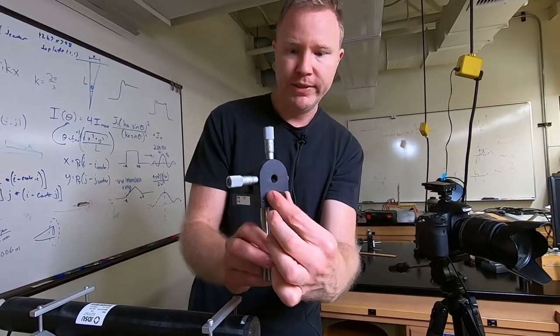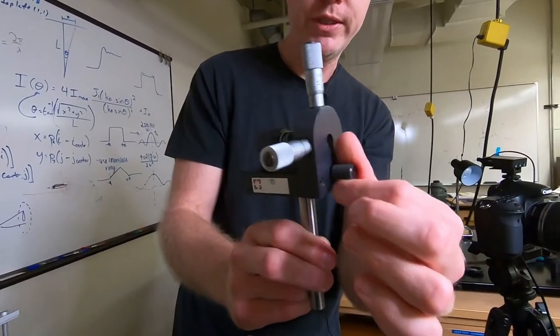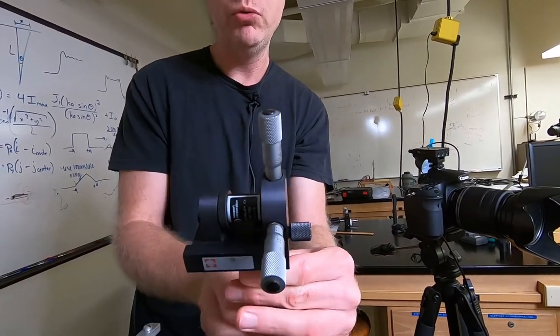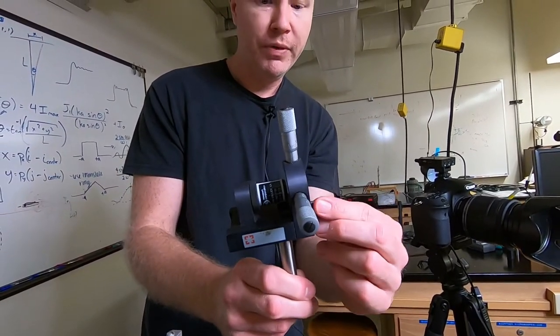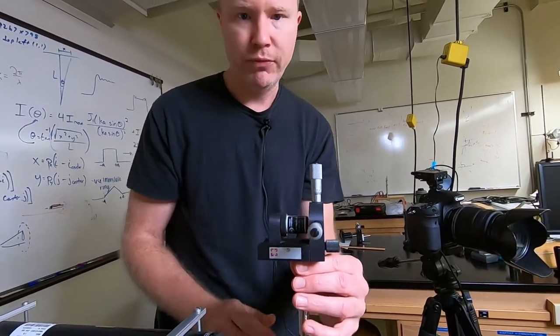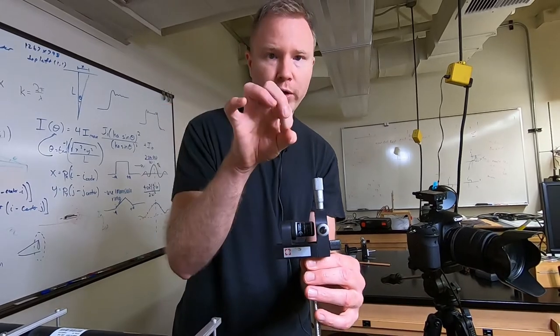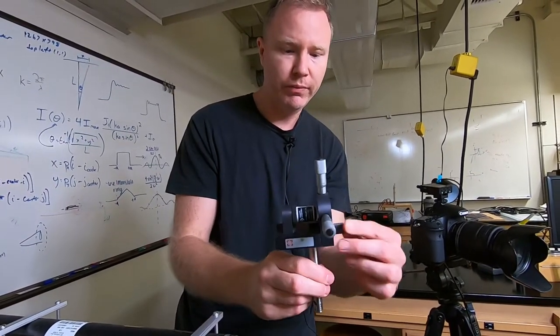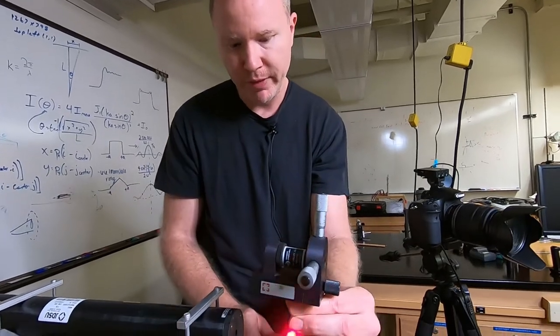There's a third knob here which is the Z direction. This just adjusts how close the microscope objective is to the pinhole. To start the process, I'm going to actually defocus it by quite a bit, because as the focus gets more and more correct, the X and Y alignment becomes more and more sensitive. So I'm setting it to a random focal position.